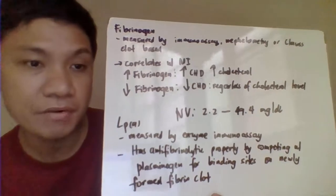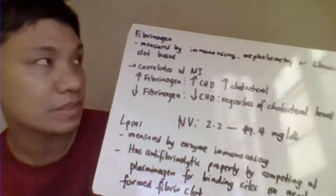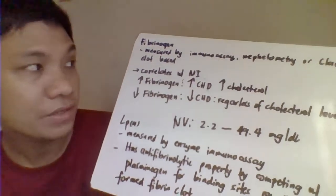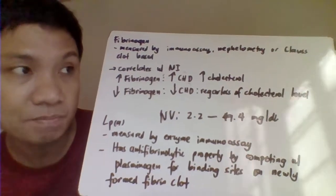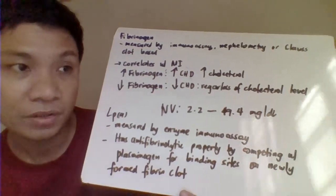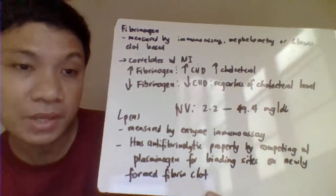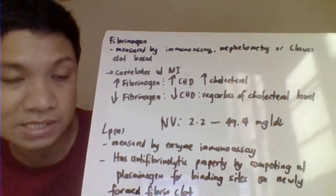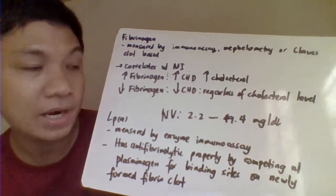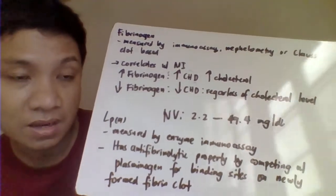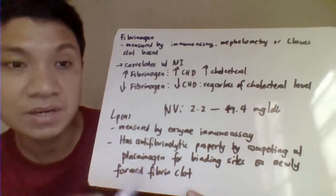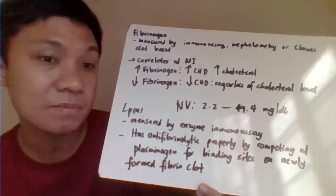Fibrinogen can also be used to diagnose thrombosis, measured by immunoassay, nephelometry, or clot-based (Klaus) method. The level of fibrinogen correlates with the degree of coronary heart disease in patients with myocardial infarction or angina pectoris. Increased fibrinogen increases risk for coronary heart disease and elevated cholesterol, while decreased fibrinogen decreases coronary heart disease risk even if cholesterol is high.